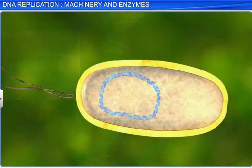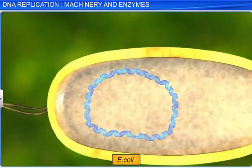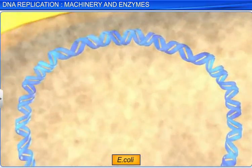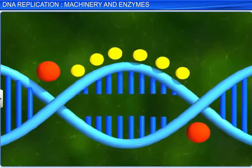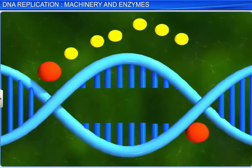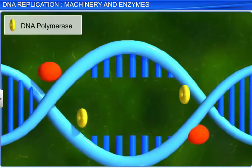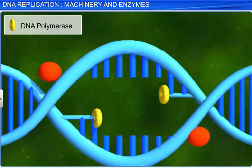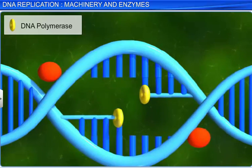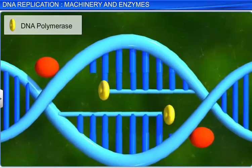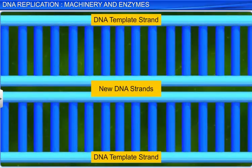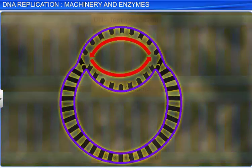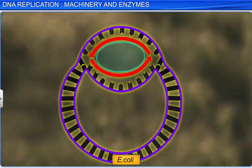In a cell, DNA replication begins at a specific point. For example, bacteria E. coli has a definite region where the DNA replication originates. Such a region is known as the origin of replication.